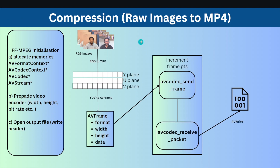This is the basic flow diagram showing how raw images are converted into MP4. We need some FFmpeg initializations — allocating memory for AVFormatContext, AVCodecContext, AVCodec, and AVStream. All these are different structures defined in FFmpeg and we need to populate all of them. In order to populate them, we first need to allocate memory, and then in the process of preparing the video encoder, we define how our MP4 file should look — its width, height, and bitrate.